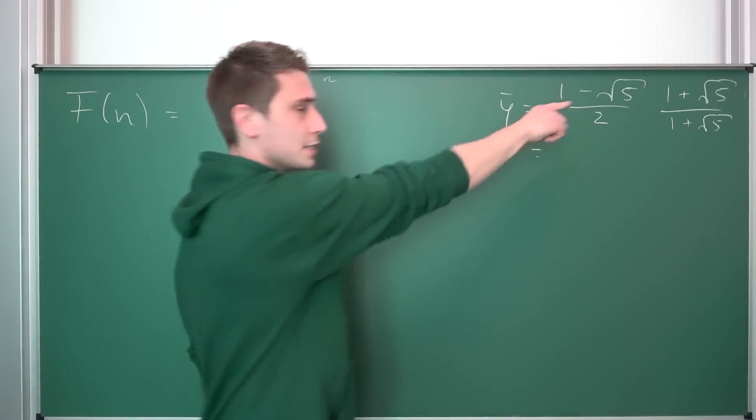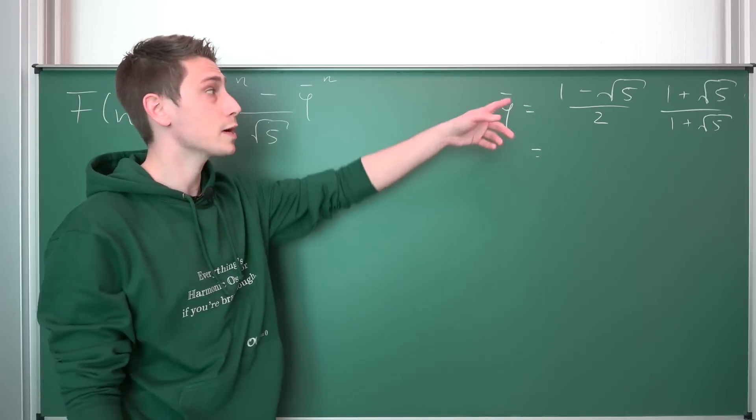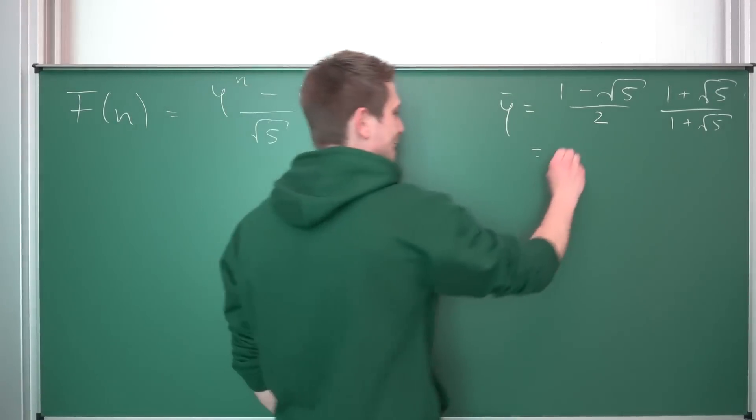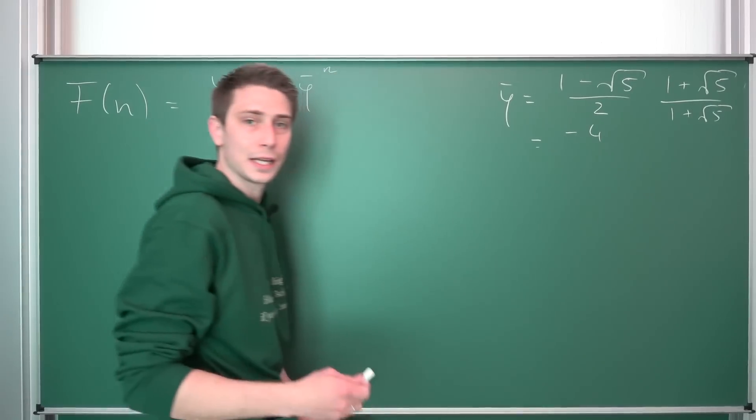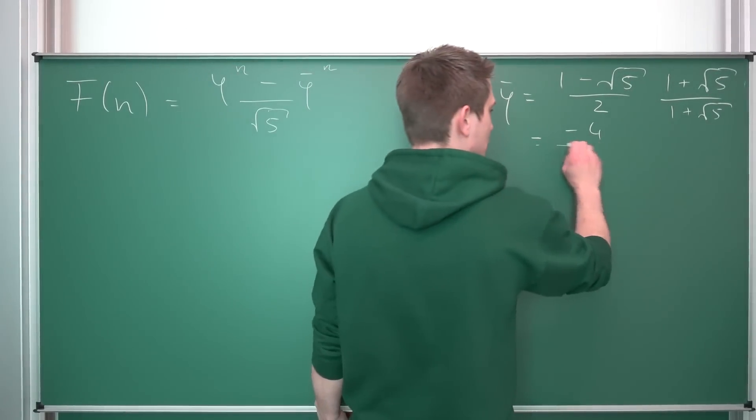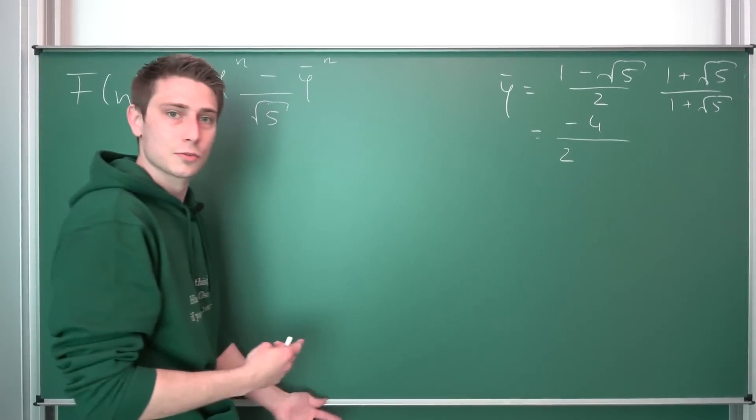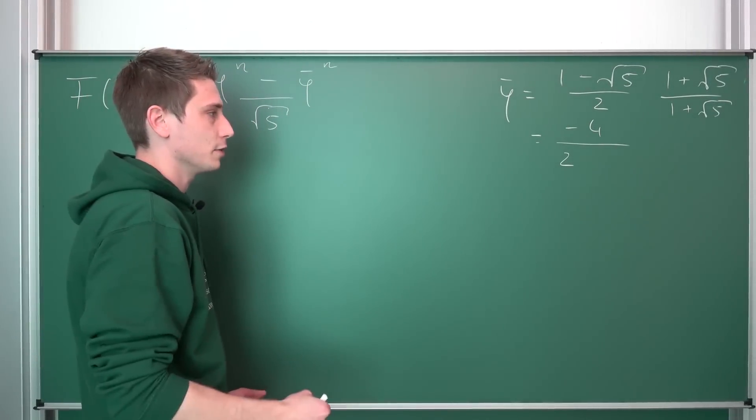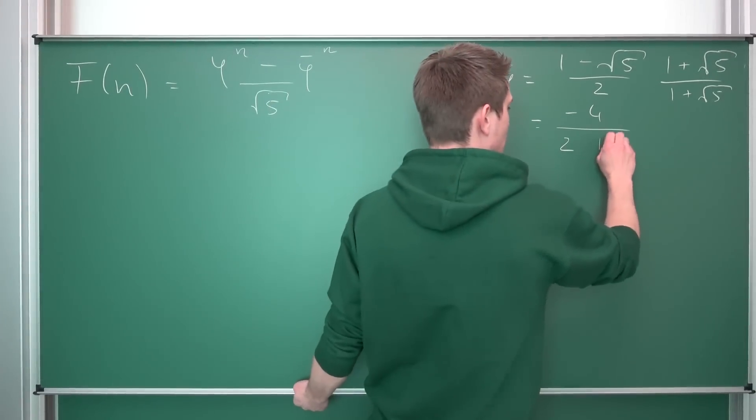What we have up here is the norm, so difference of two squares. 1 minus 5 is going to give us negative 4. Negative 4 is negative 2 times 2, if you trust the Peano axioms and the extension to the negative integers. So 2 times 1 plus the square root of 5.